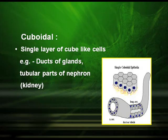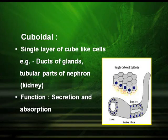The next type of simple epithelium tissue is the cuboidal epithelium. As the name suggests, these cells are cuboidal in shape. They have a single layer of cube-like cells and are found in the ducts of glands and the tubular parts of the kidney, that is in the nephrons. Their function is secretion and absorption.